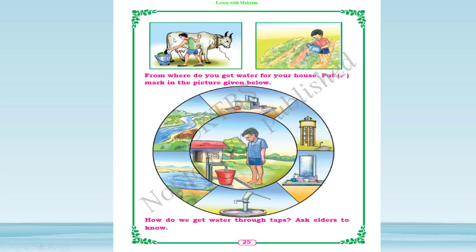We also need water for washing animals and for plants. From where do you get water for your house? Put a right mark on the pictures. These are water resources — like a well, a river, a pond, and water dams.